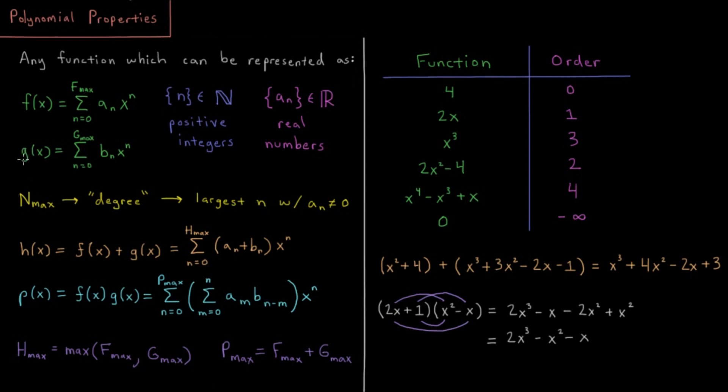And then g would be as well, if I can represent this as a sum from 0 to g max of another set of coefficients bn times x to the n. So in each of these cases, f max and g max are what I refer to as n max here. And that is called the degree of the polynomial.